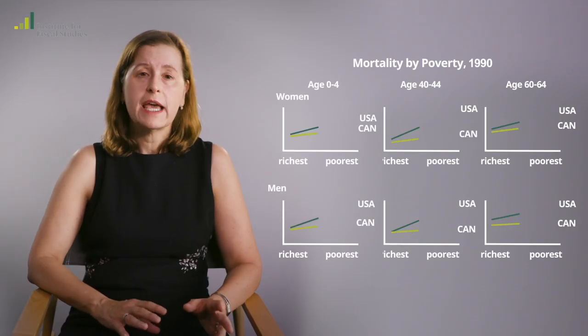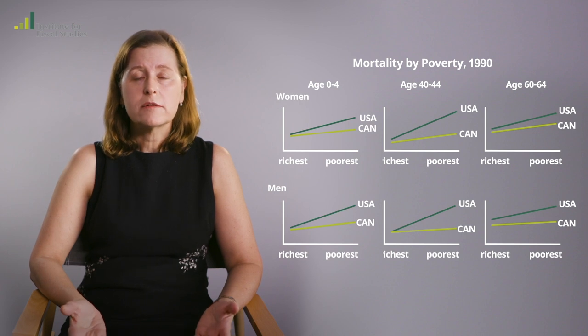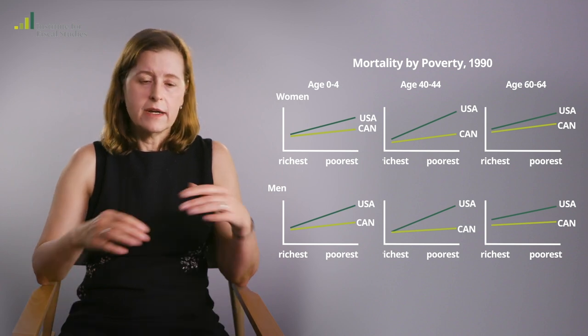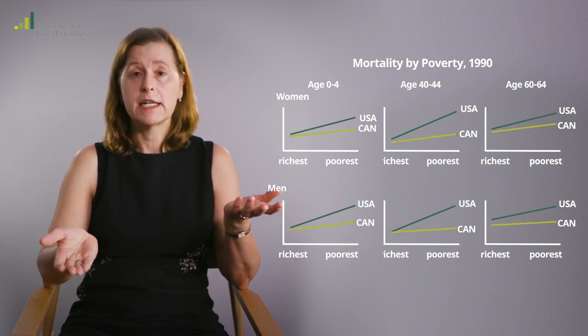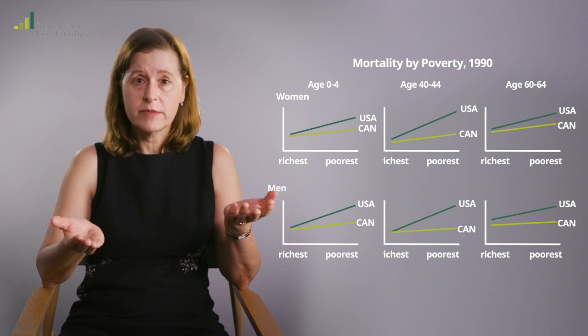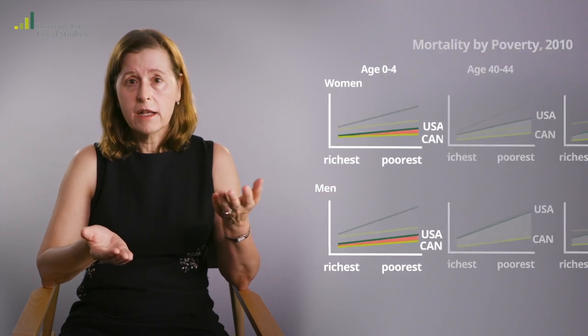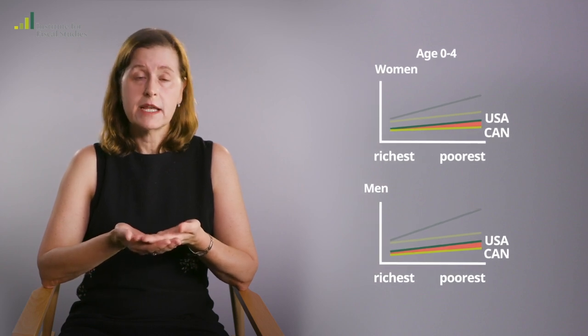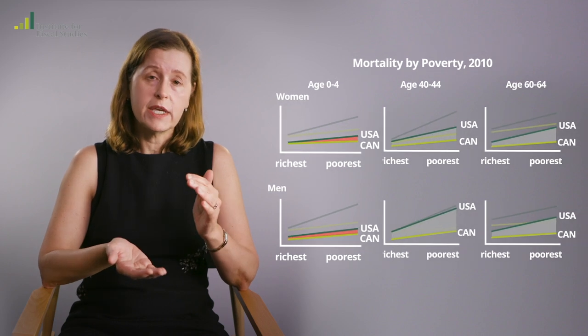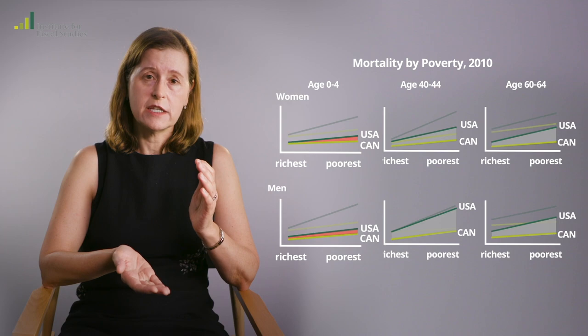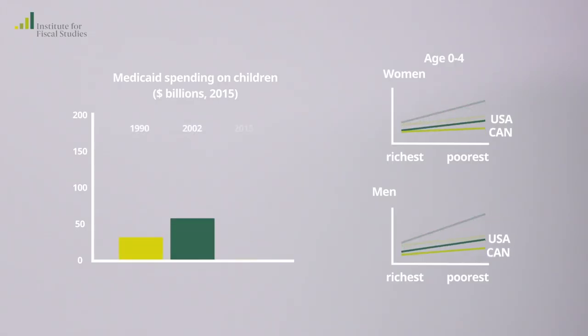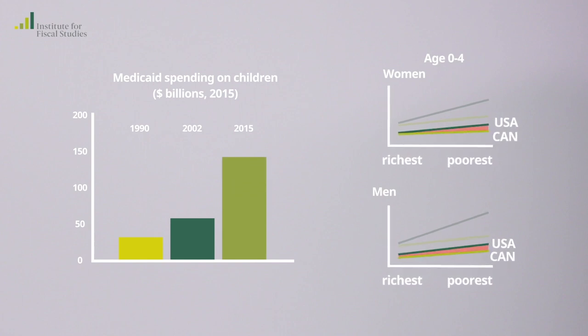We look at the same age groups in Canada over the same time period, and what we see is that Canadians have lower mortality rates at all ages than Americans, which is a little bit surprising perhaps just by itself. But over this time period, mortality rates for children fell and approximate the low levels that you see in Canada, whereas for other groups, there's still a very big gap between mortality rates in Canada and the U.S. So in the one group where there was an expansion of health insurance, we see that health in the U.S. converges to the Canadian level, whereas for the other groups, Canadians still have much better mortality rates.